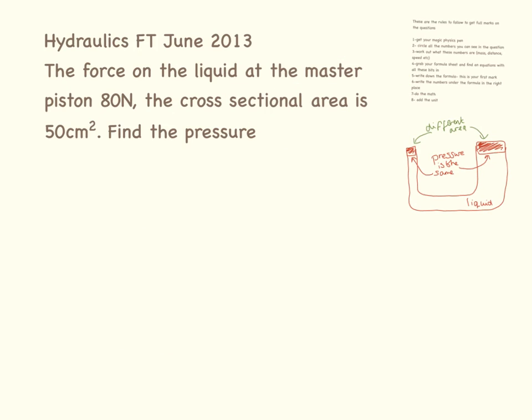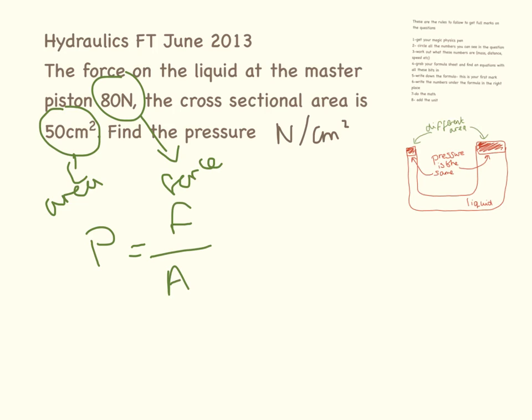Okay, so this is an exam question and they want the answer in Newtons per centimeter squared. So, I circle my numbers. This is force. This is area. Pressure equals force over area. So, that is 80 divided by 50, which makes 1.6 Newtons per centimeter squared.